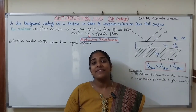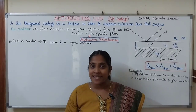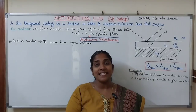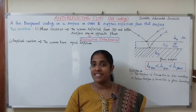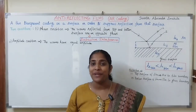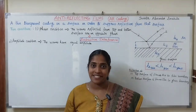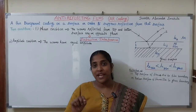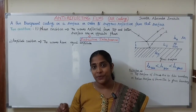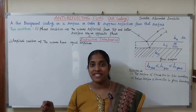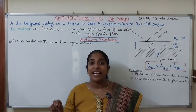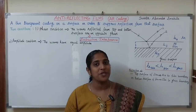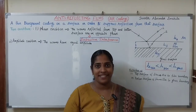In a solar cell, we are using sunlight, and the incident light energy is converting into electrical energy. If the loss of light energy due to reflection is large, that will lead to less production of electrical energy.